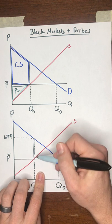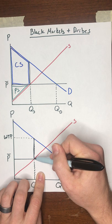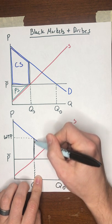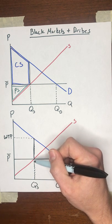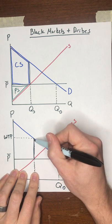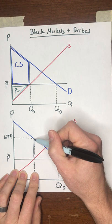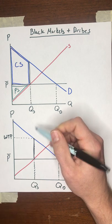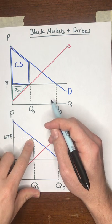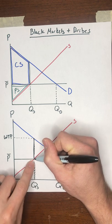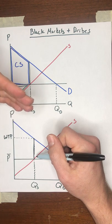What's the bribe amount that we would expect the buyers to end up offering to the sellers? Well, it's going to be an amount equal to the difference between their willingness to pay and the price they're allowed to be charged on the market. So the length of this segment here would show you the bribe that's being offered per unit. That's one possibility. Another possibility is the sellers don't even wait for the buyers to make those bribes to them. Instead, they could refuse to put these goods on their shelves when they come into stock and instead sell them on the black market.